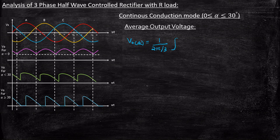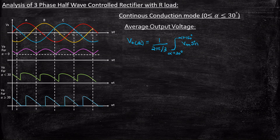The lower limit of integration is alpha plus 30 degrees — this is the point where conduction starts. The upper limit is alpha plus 150 degrees, since the output voltage waveform continues until alpha plus 150 degrees. So the integrand is Vm·sin(ωt)·d(ωt).